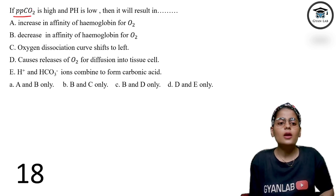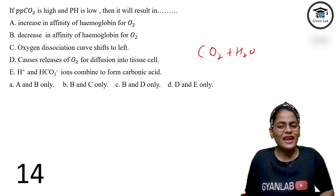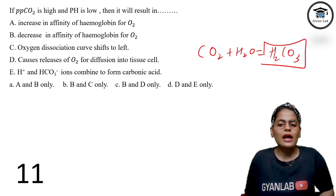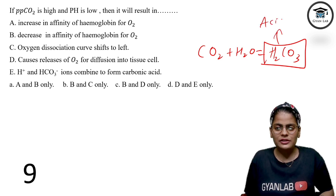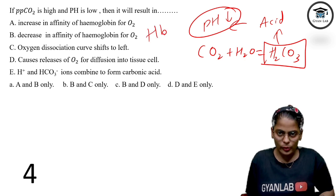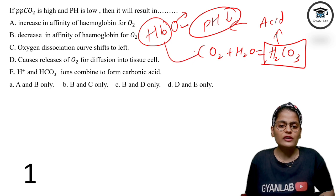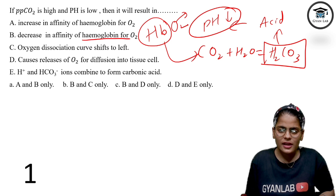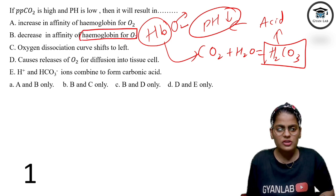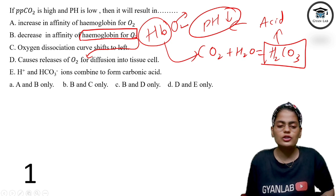If the CO2 level in the blood increases, CO2 reacts with water to form carbonic acid. Carbonic acid being an acid causes the pH to decrease. Due to decreased pH, hemoglobin releases oxygen to the tissues and instead binds with CO2. This causes the affinity of hemoglobin for oxygen to decrease, which causes oxygen to move to the tissue cells because hemoglobin releases it. Options B and D are the right answers.